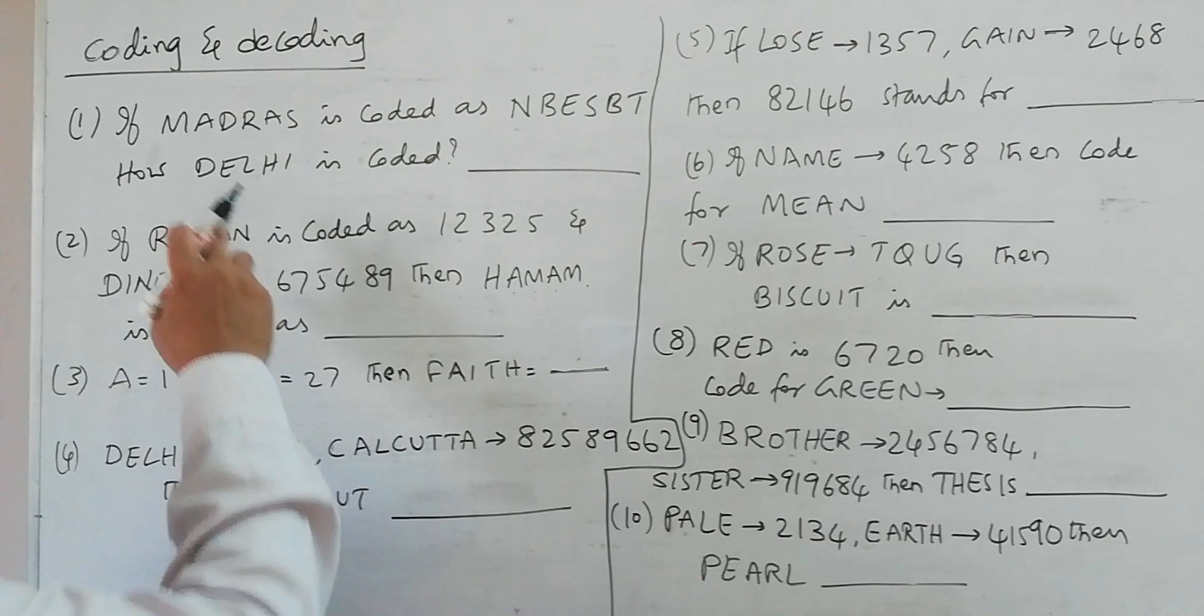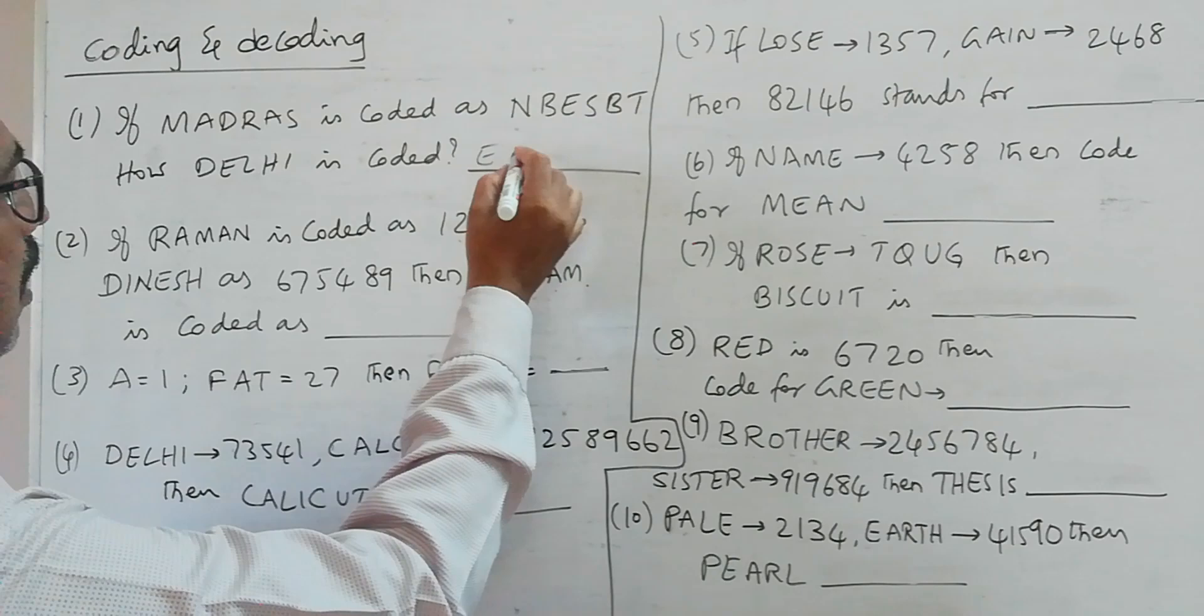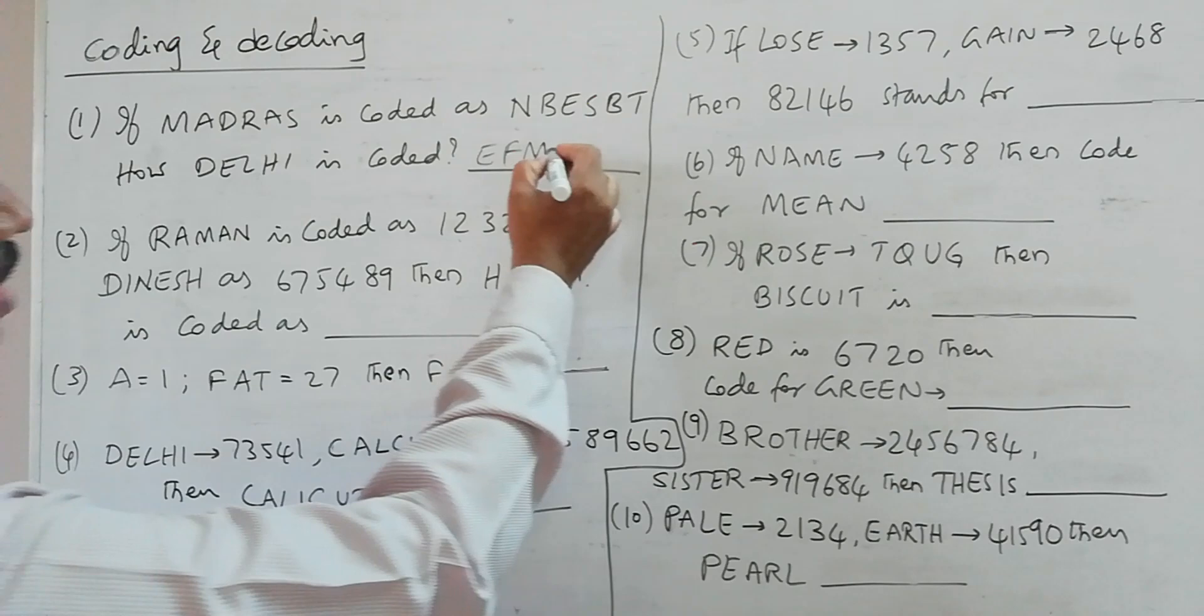In the same way if we code DELHI, D is coded as E, E is coded as F, L is coded as M, H is coded as I, and I is coded as J. So the answer is EFMIJ.